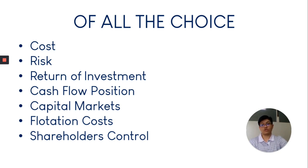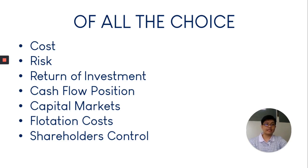Number four is the cash flow position. The cash flow position refers to the company's capacity to pay out loans and cover operating expenses — whether there will be a sufficient amount left to pay for the debt. If we have sufficient funds reserved to pay debts right away, then go with debt financing. If we don't, we have the option to go with equity financing.